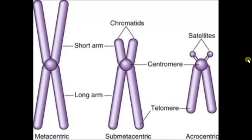We will now classify chromosomes on the basis of the position of the centromere. First is metacentric — the centromere is in the middle. Second is submetacentric — the centromere is displaced towards one end. Third is acrocentric — the centromere is far towards one end.